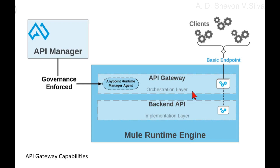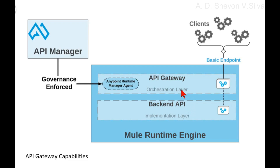Overall, API Gateway allows you to add a dedicated orchestration layer on top of your back-end APIs and services, to help you separate orchestration from implementation concerns.